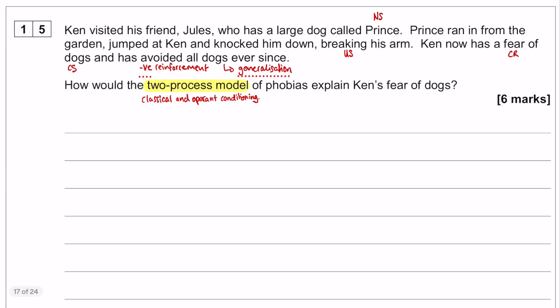There's question 15. You can see the stem on your screen now — give that a quick read through. I've also made a few little notes on that stem just so you can see the kind of things I'm going to be focusing on. The two process model of phobias is of course the use of classical and operant conditioning to explain the acquisition and the maintenance of phobias, but this is a six mark application question and so we need to make sure that we are applying to Ken at every turn.